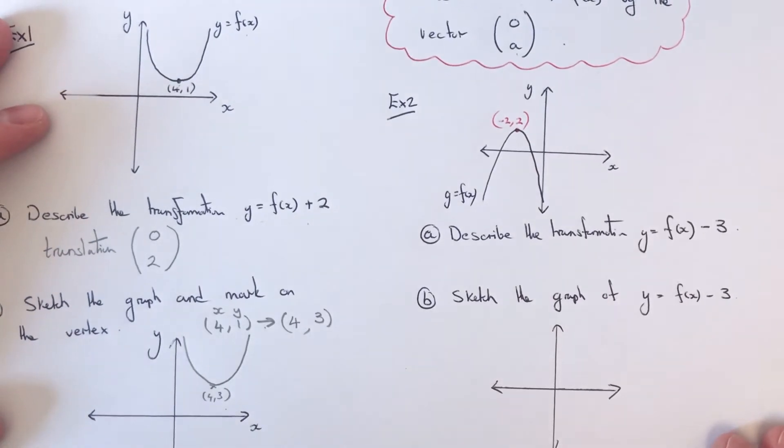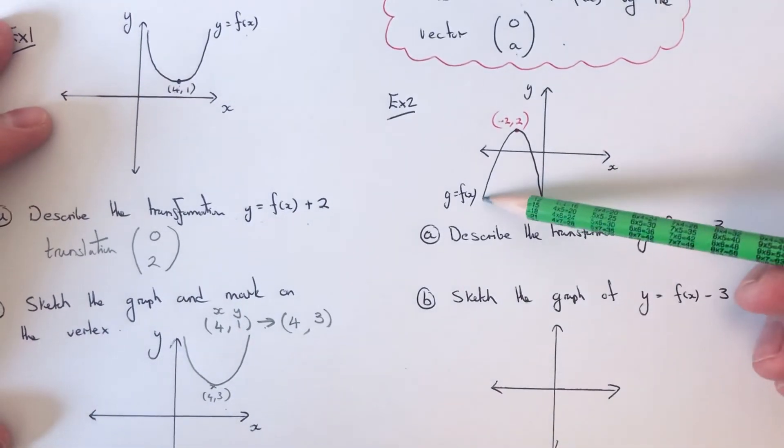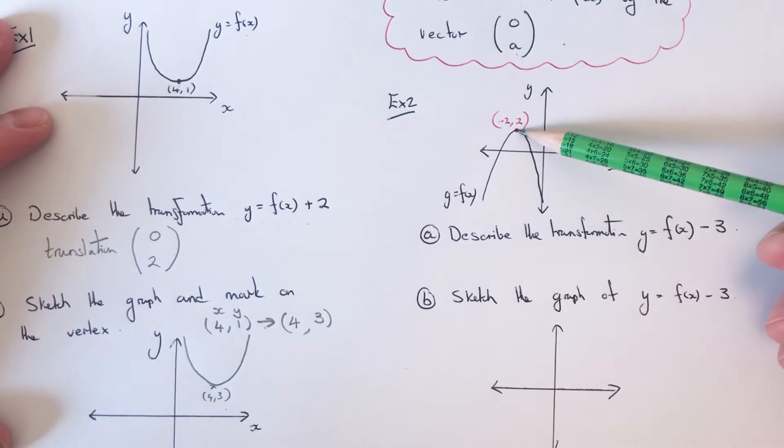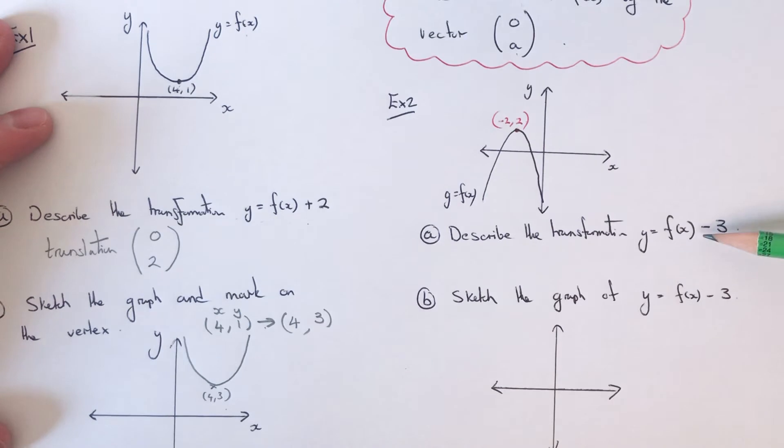Our second one then is we've got the graph y equals f of x again. And our vertex this time is at minus 2, 2. And we've got to describe the transformation y equals f of x, take away 3.